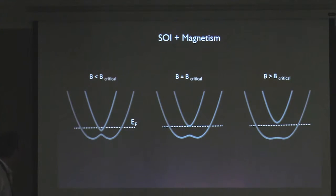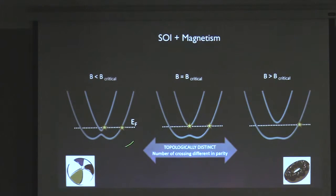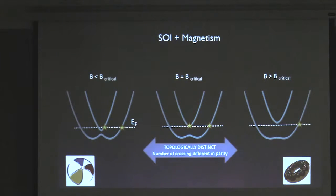In some sense these two situations are topologically distinct. On one hand you have an even number of crossings of these spin-split bands, and on the other you have an odd number of crossings. This middle case is a kind of boundary, where if you imagine it topologically as going from a ball and trying to punch a hole through it, this is the moment where you actually punch through.